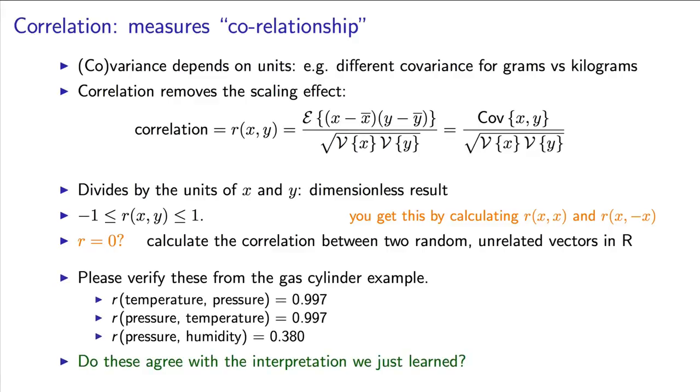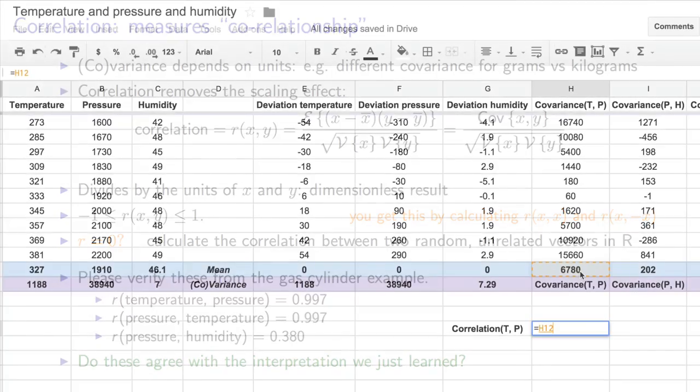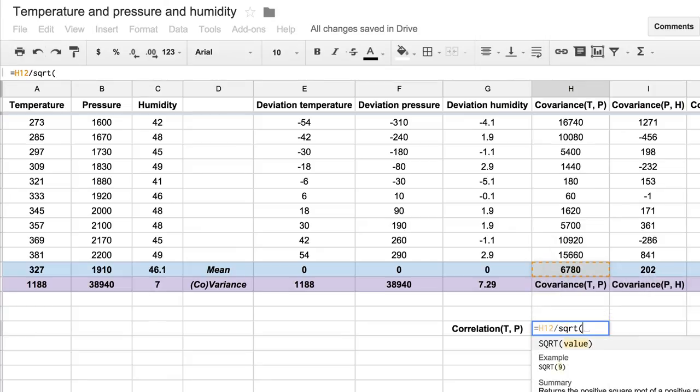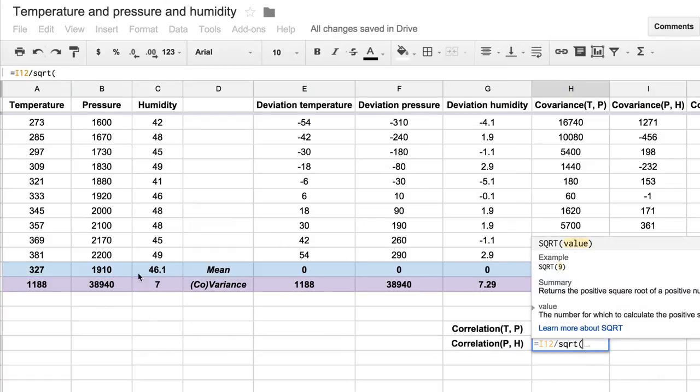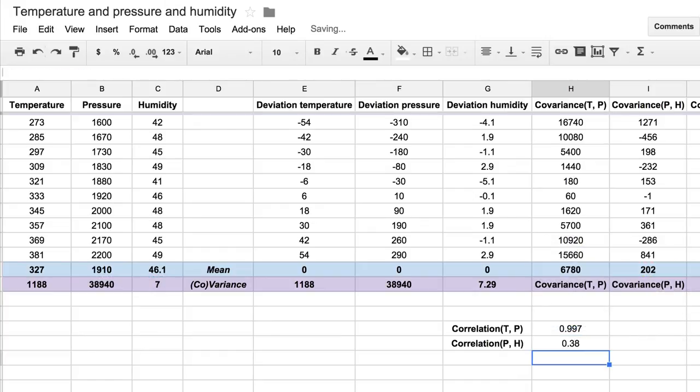Let's look back at the temperature and pressure example, and calculate the correlation now of that quantity. The covariance is the numerator, which we've calculated before, and let's divide through by that denominator term. We obtain a value of 0.997. The correlation of pressure with humidity is 0.380.